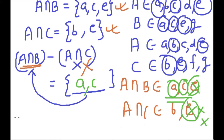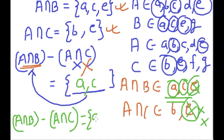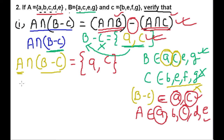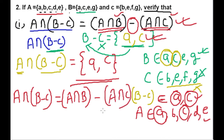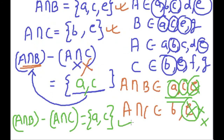So (A intersection B) minus (A intersection C) = {A, C}. Now looking at the first part, A intersection (B minus C) = {A, C} as well. This means A intersection (B minus C) equals (A intersection B) minus (A intersection C), since both sides equal {A, C}. We have proved this identity here.